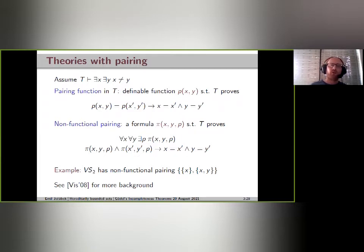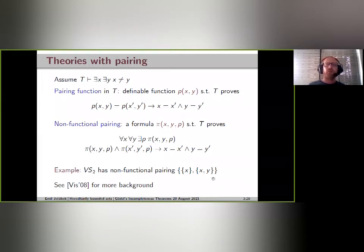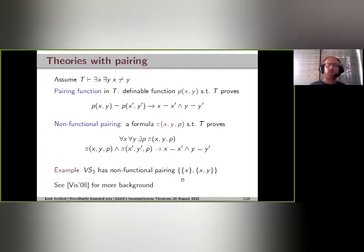A non-functional pairing is a ternary formula such that the theory proves that for every x and y there is an element making a pair of x and y, and moreover a pair of x,y and a pair of x',y' can be the same only if x equals x' and y equals y'. As an example, the fragments VSn have a non-functional pairing when n is at least two — we may just use the Kuratowski pairing. Since VS2 does not include the axiom of extensionality, there may be many sets that are the singleton of x, and many sets that are the pair of x and y, making it a non-functional pairing.